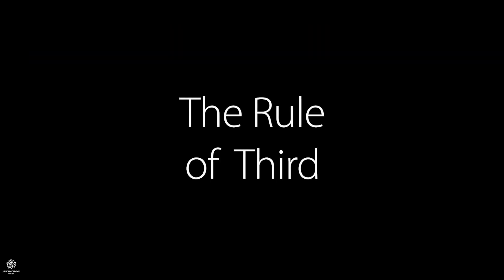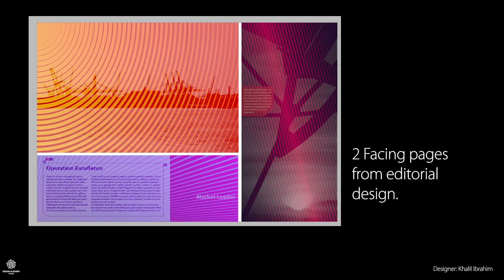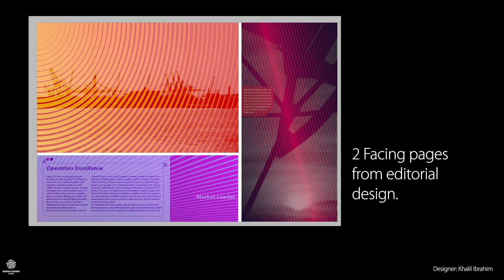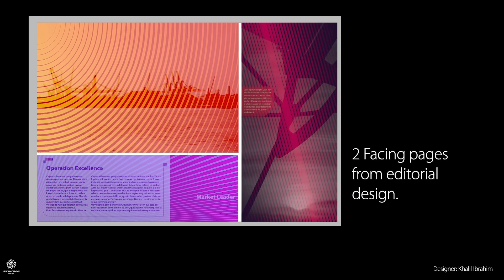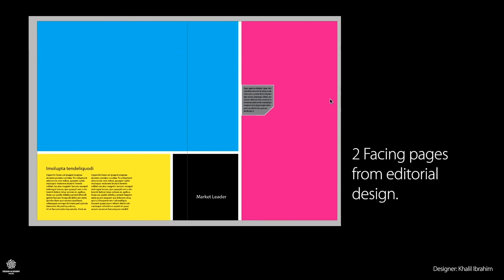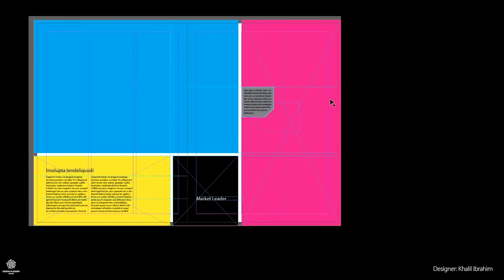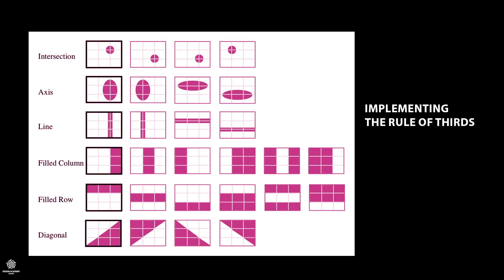The rule of thirds is a simple technique where designers divide their designs up into three rows and three columns. At the point where the vertical and horizontal lines meet is where your focal points should be. Using the rule of thirds is a great way to kick off your design's composition, as it gives you a quick guide to positioning and framing your elements.